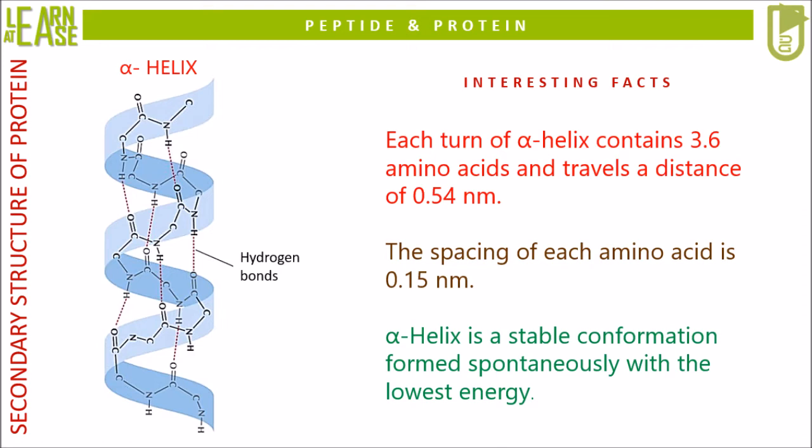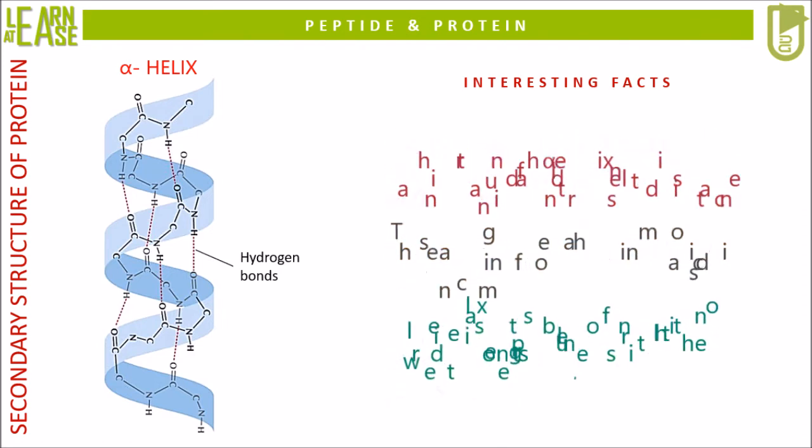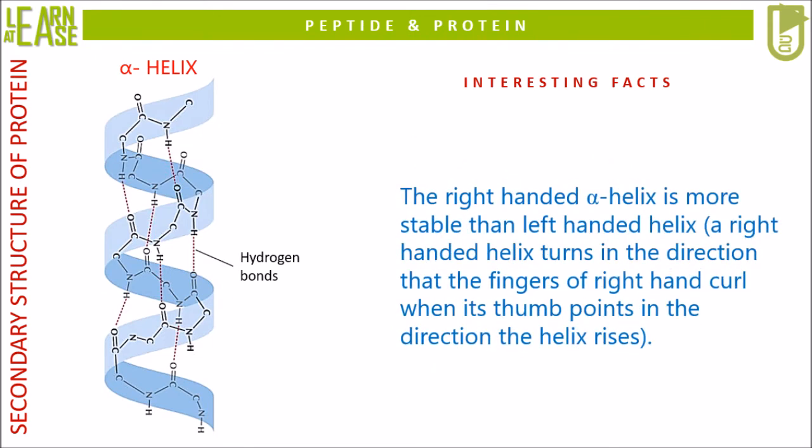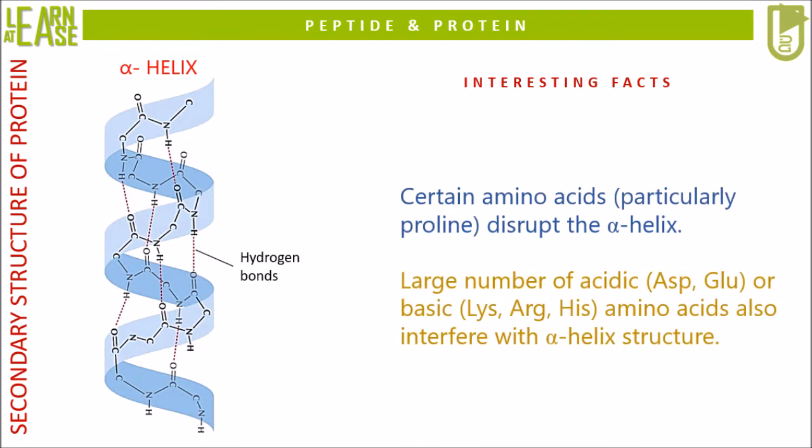Alpha helix is a stable conformation formed spontaneously with the lowest energy. The right-handed alpha helix is more stable than the left-handed helix. Proline in the peptide can disrupt the alpha helix. Acidic and basic amino acids such as aspartate, glutamate, lysine, arginine, and histidine also interfere with the alpha helix structure.